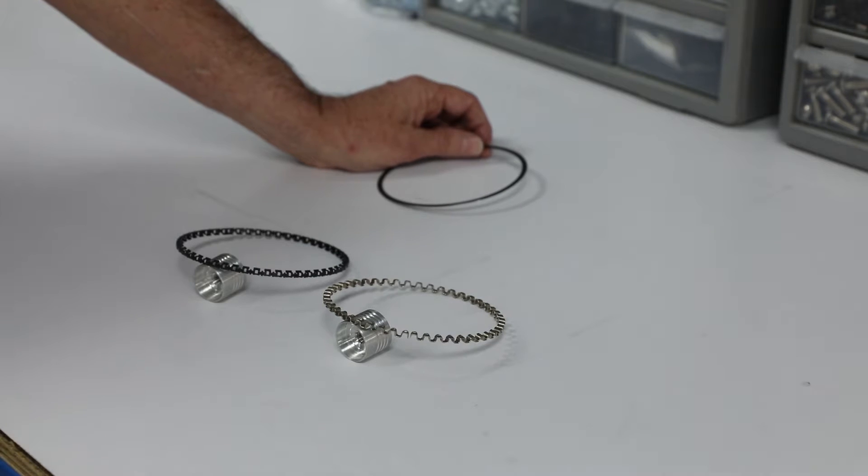But if you've got big boost, big nitrous, big cylinder pressure, those engines have a tendency to have a phenomenon that's called waffling the oil ring rails.